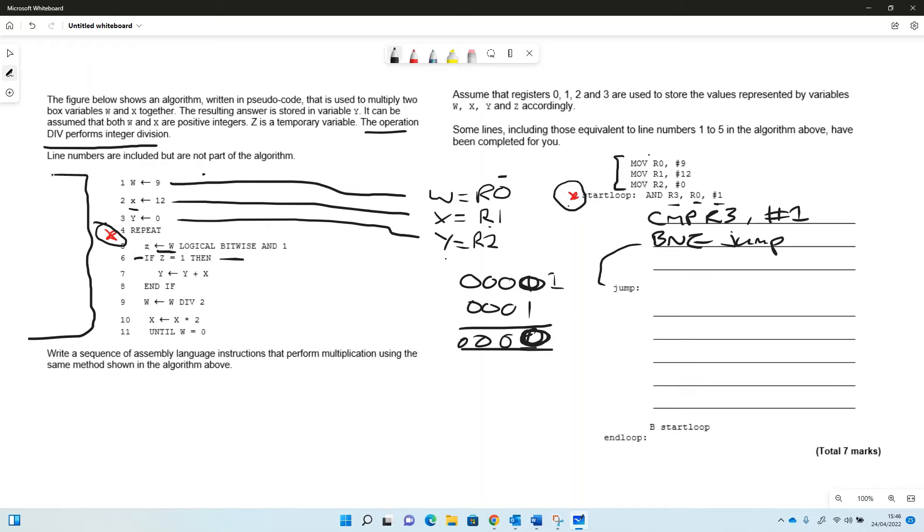But if it is equal to, we're going to do the addition. So the addition is y gets y plus x. Or y is register two. So we're going to say ADD, put it in register two, the value of register two and register one, because the line of code we've got here, y plus x, y is register two, x is register one. So we're going to add them together.